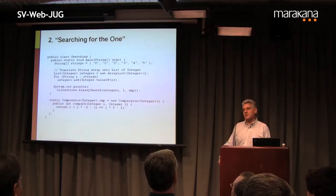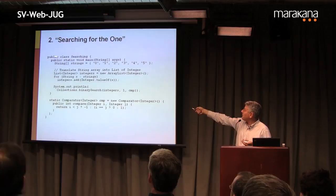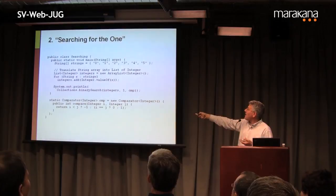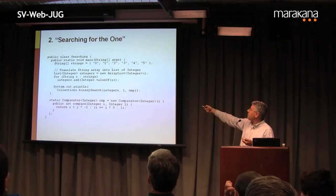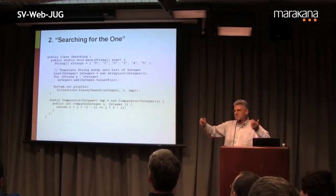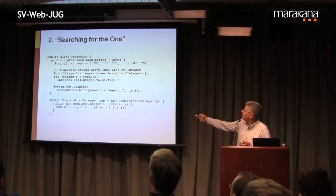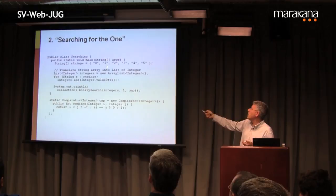I have one more puzzle before the main course: Searching for the One. In this program, we have an array of strings: 0, 1, 2, 3, 4, 5. We translate the string array into a list of integers, then use a binary search to search for the integer 1 inside that list, using a comparator. Here is the comparator.